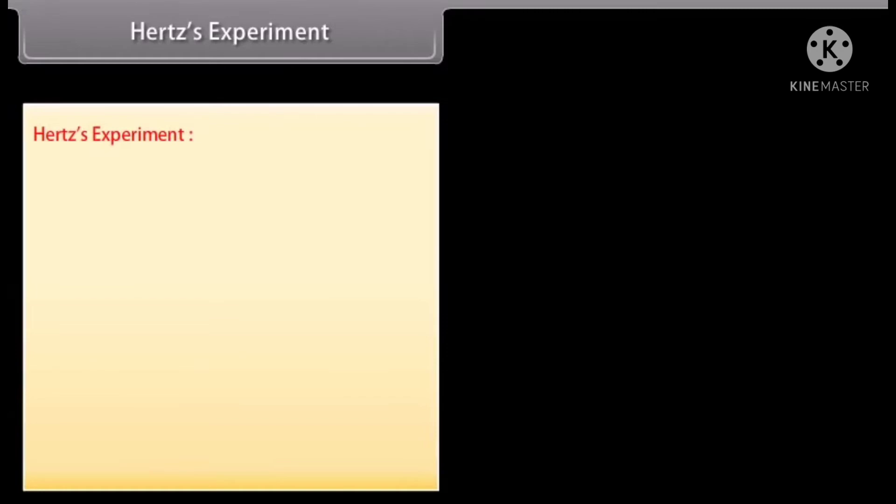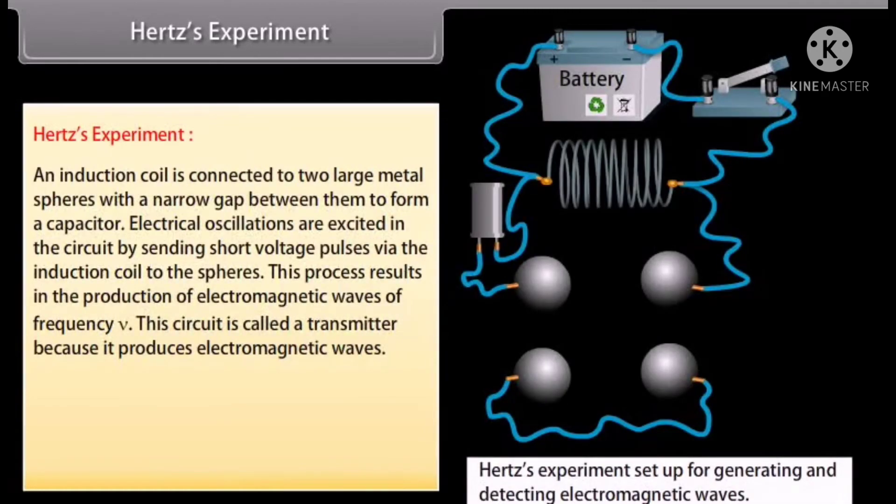Hertz experiment: An induction coil is connected to two large metal spheres with a narrow gap between them to form a capacitor. Electrical oscillations are excited in the circuit by sending short voltage pulses via the induction coil to the spheres, charging one sphere positive and the other negative. In this ionized state, the electrons and ions in the air gap oscillate back and forth with the same frequency nu as that of the circuit.